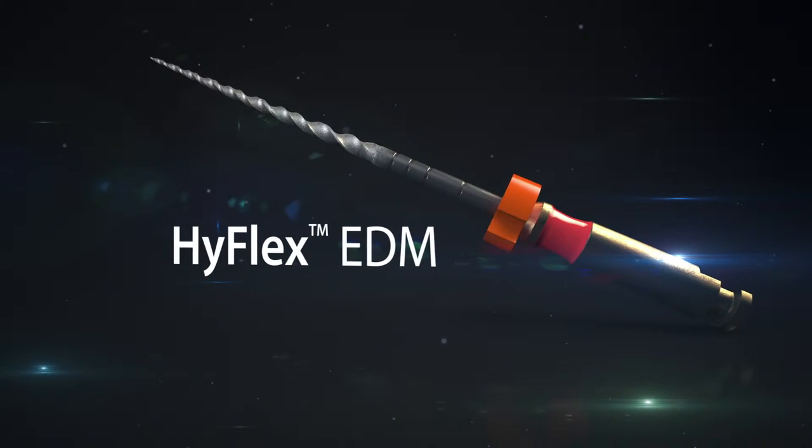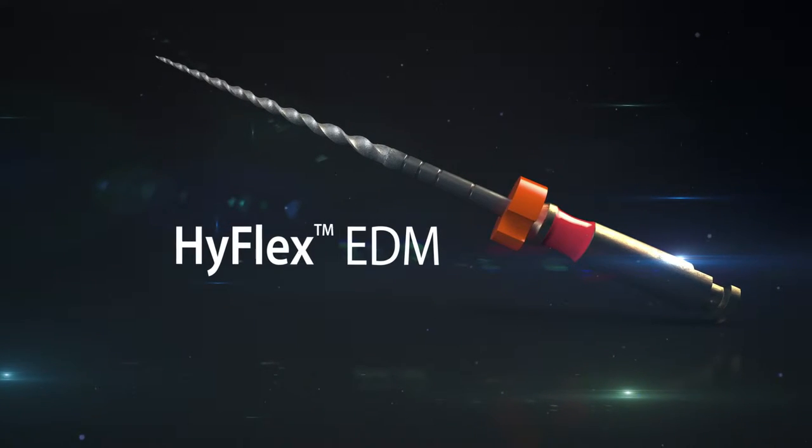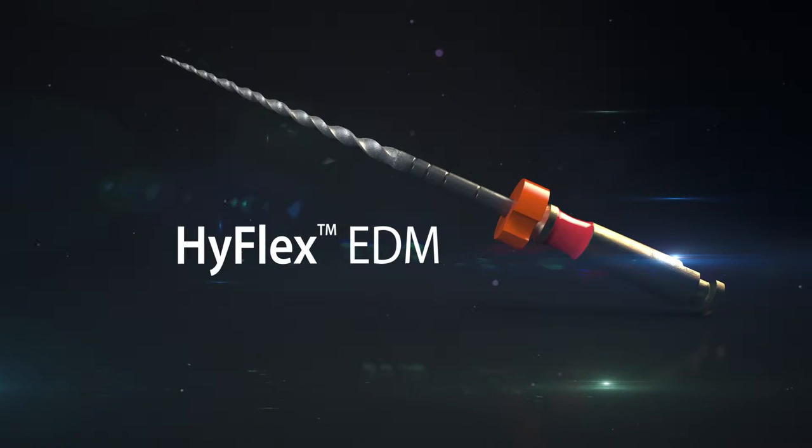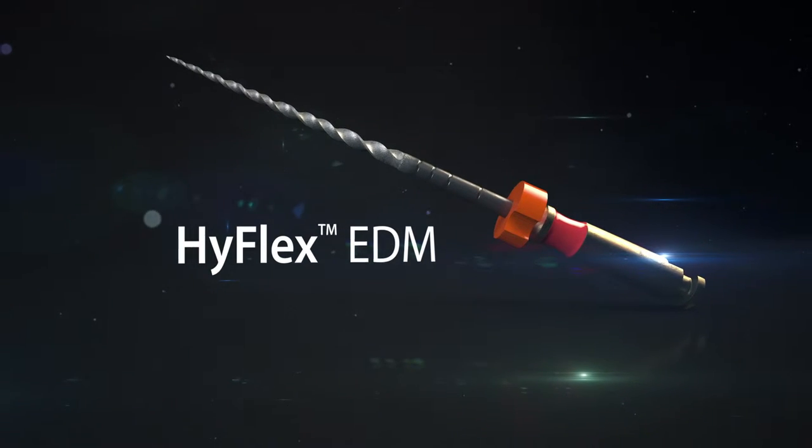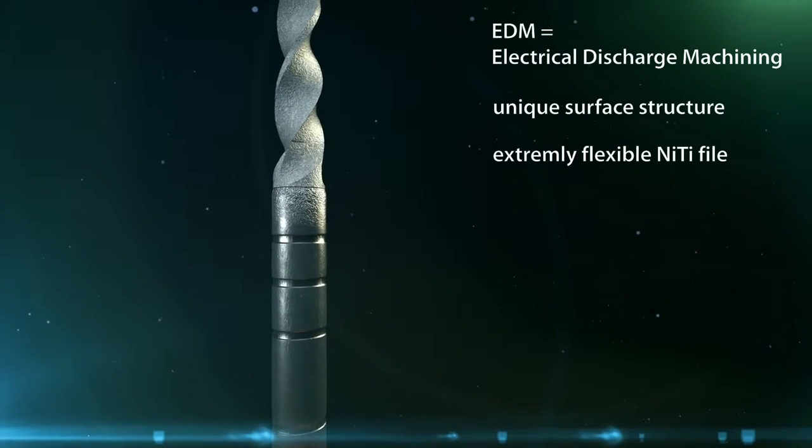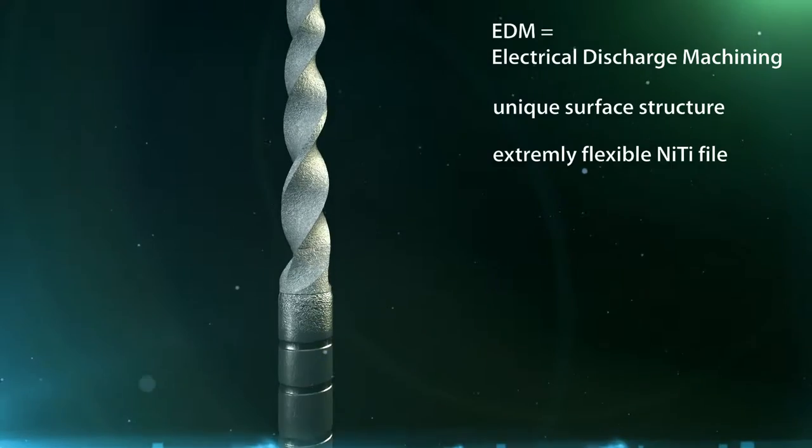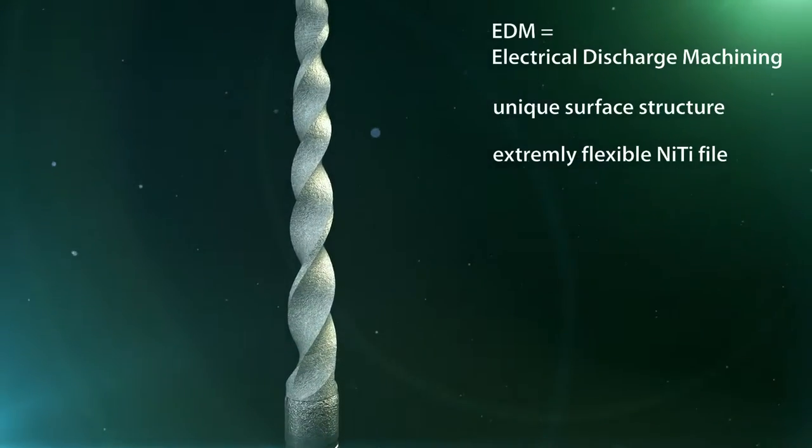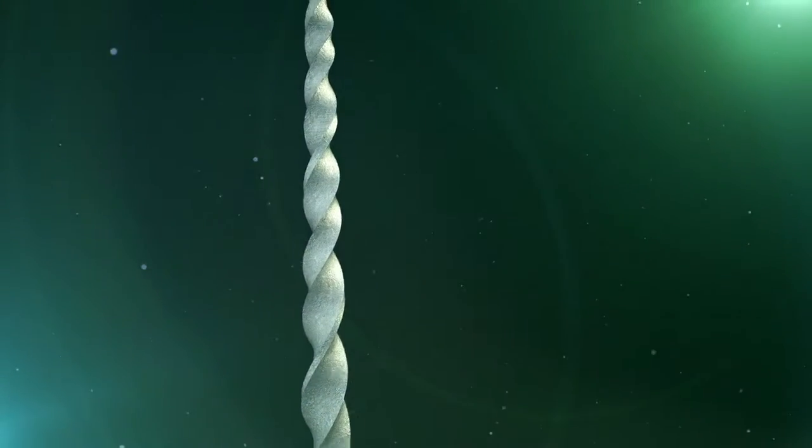Spark erosion by electrical discharge machining produces an especially efficient and extremely flexible nitinol file. The surface of the new file is hardened by the process of melting and evaporation. This produces an exceptional root canal file which is fracture resistant and flexible up to large ISO sizes.